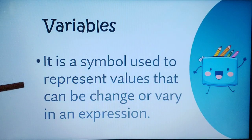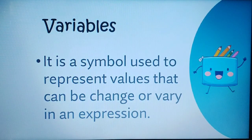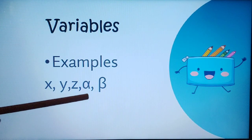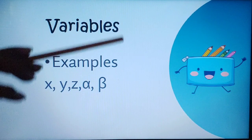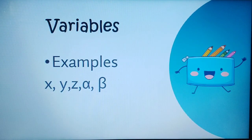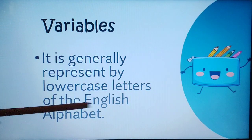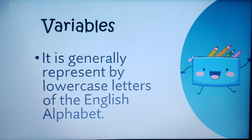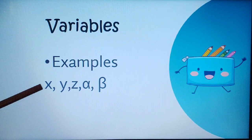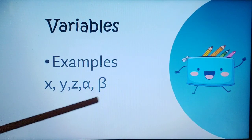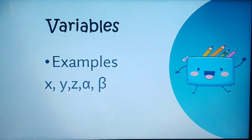For the variables, it is a symbol used to represent values that can be changed or vary in an expression. Examples: we have X, Y, Z, Alpha, and Beta. Under variables are the letters of the English alphabet — they are generally represented by letters. So X, Y, Z, Alpha, Beta, and also A, B, C — all the alphabets are under variables.